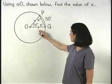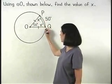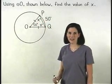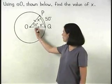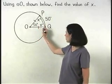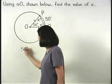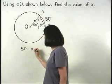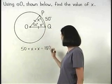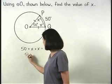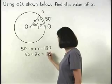Now, to find the value of x, remember that the sum of the measures of the angles of a triangle is 180 degrees. So we can set up the equation 50 plus x plus x equals 180. This simplifies to 50 plus 2x equals 180.